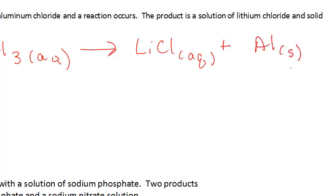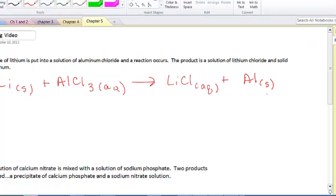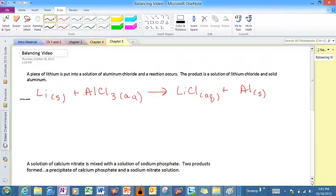So what I've done right here is I've written what we could call a skeleton equation — just the formulas of the reactants and the formulas of the products. But right now what we've done is, in essence, broken the law of conservation of matter. You'll notice I started with three chlorines on the reactant side, yet I only have two on the product side. So we need to put coefficients in front of any formulas to get the same number of atoms of each type on both sides. The only thing we're allowed to do is put coefficients in front of a formula — you can never change or add a subscript, because then you're actually changing the substance.